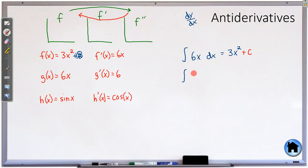So if we keep going, that means the antiderivative of 6 is going to be equal to 6x. But again, we also need that plus C.